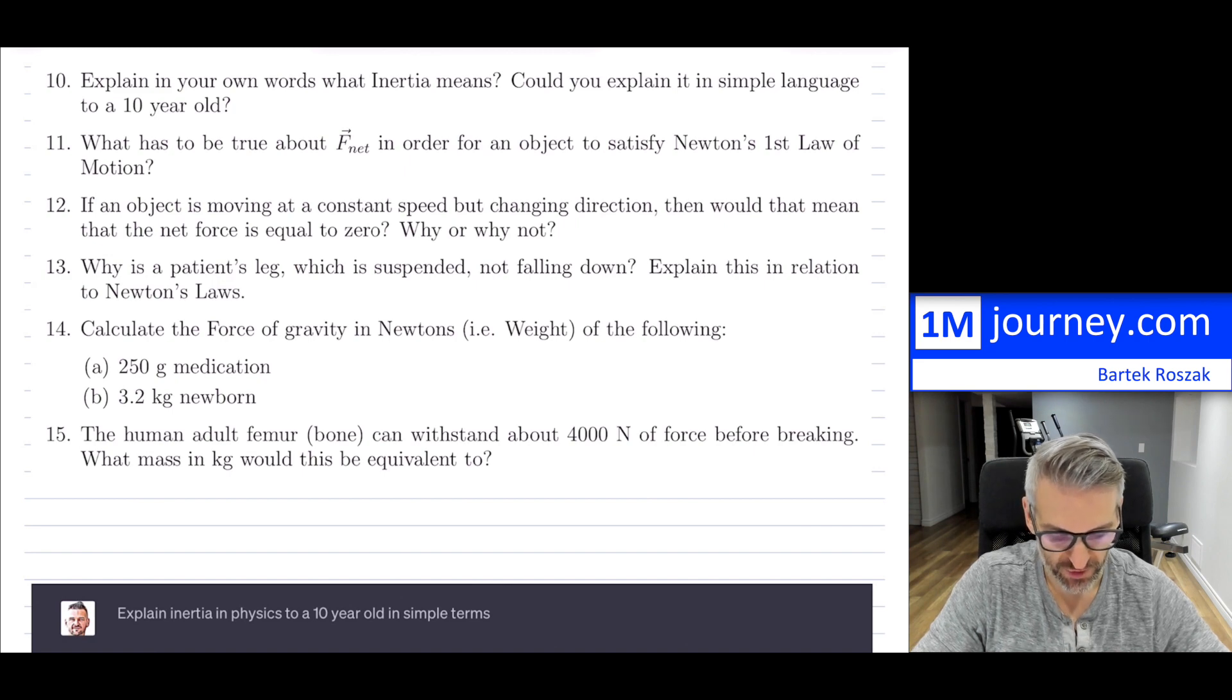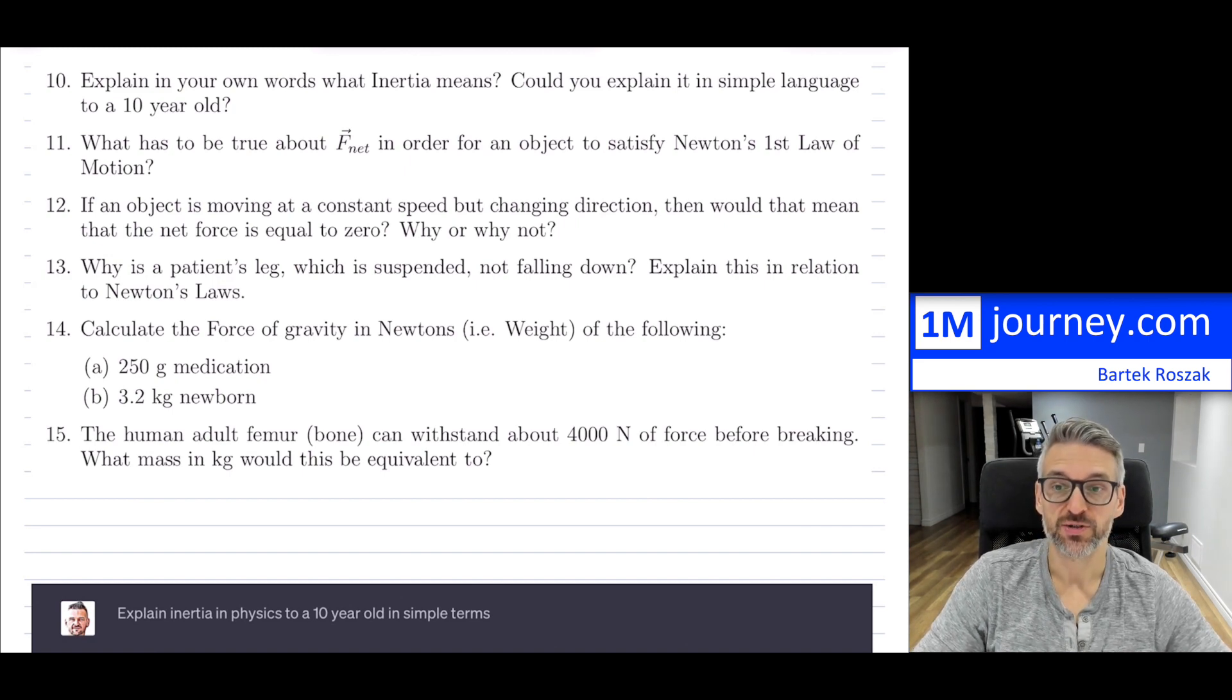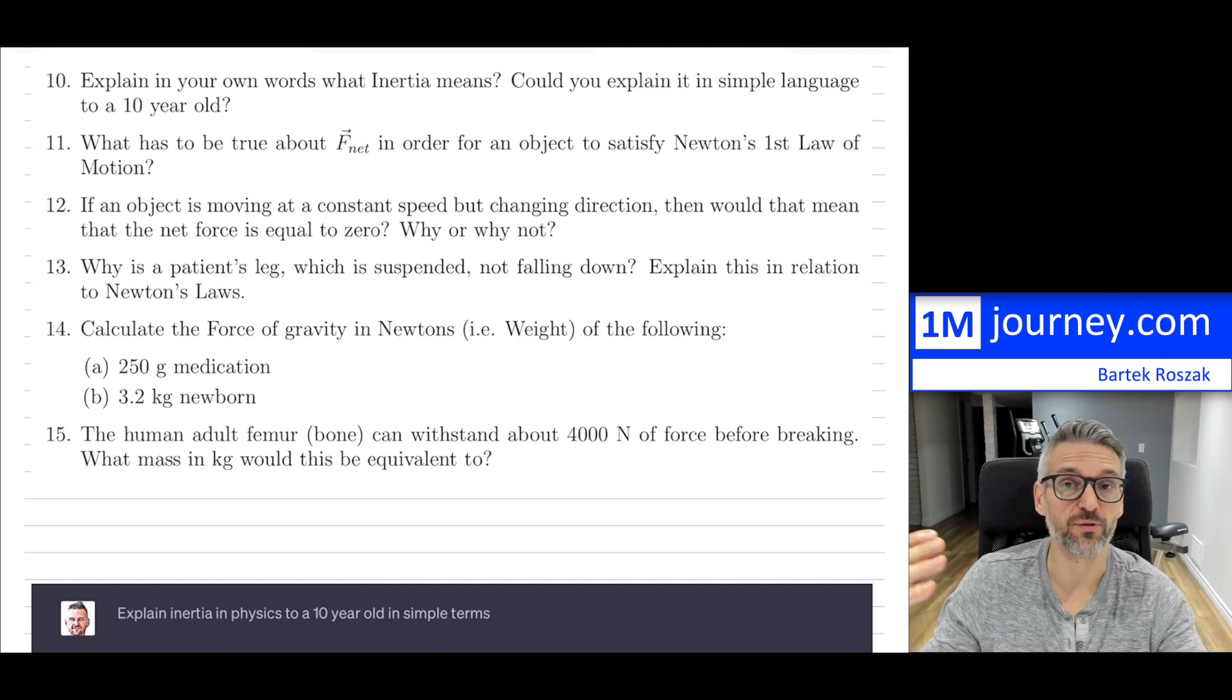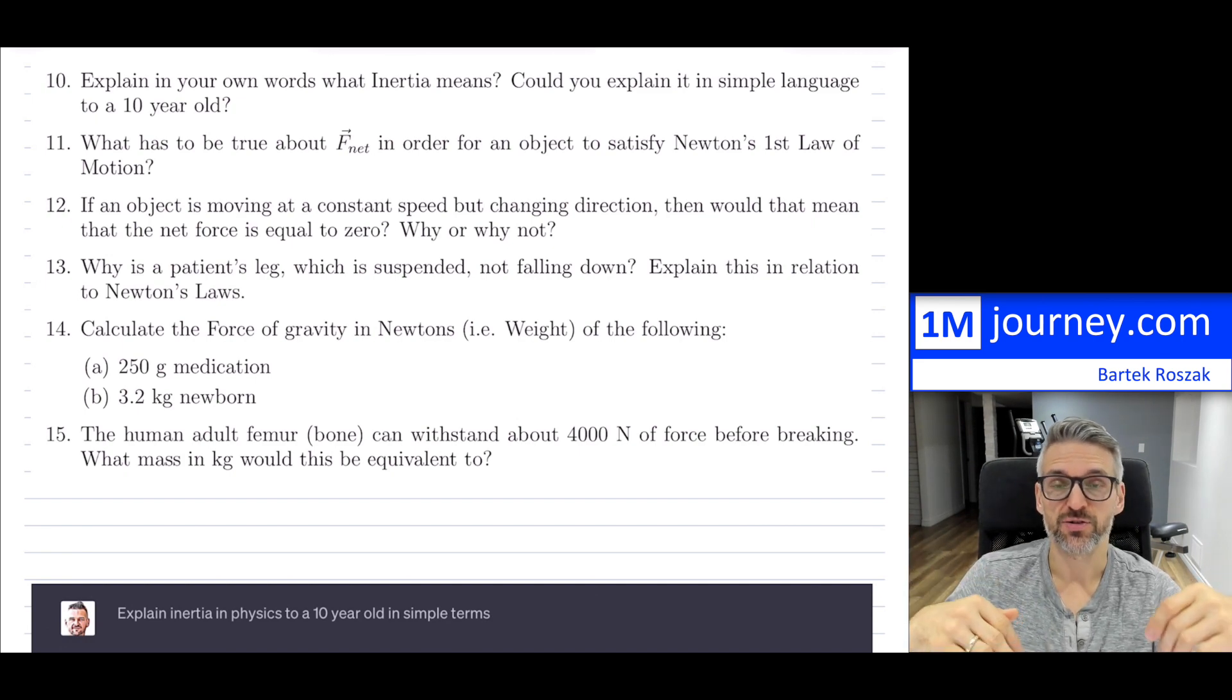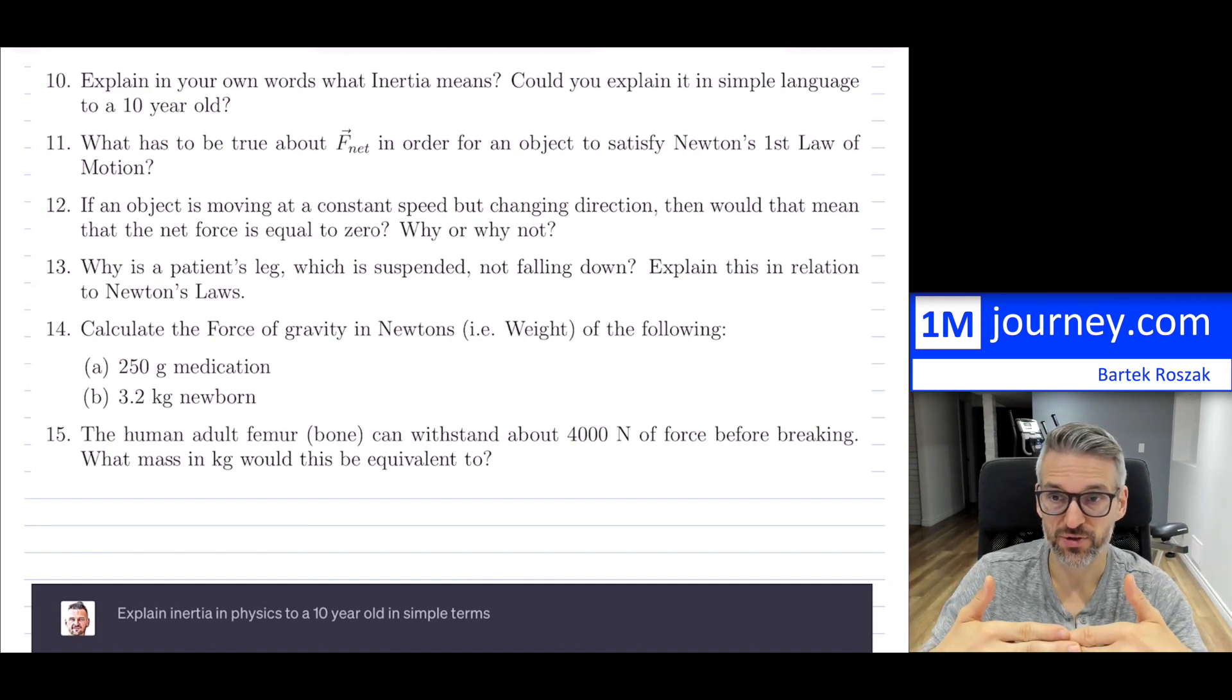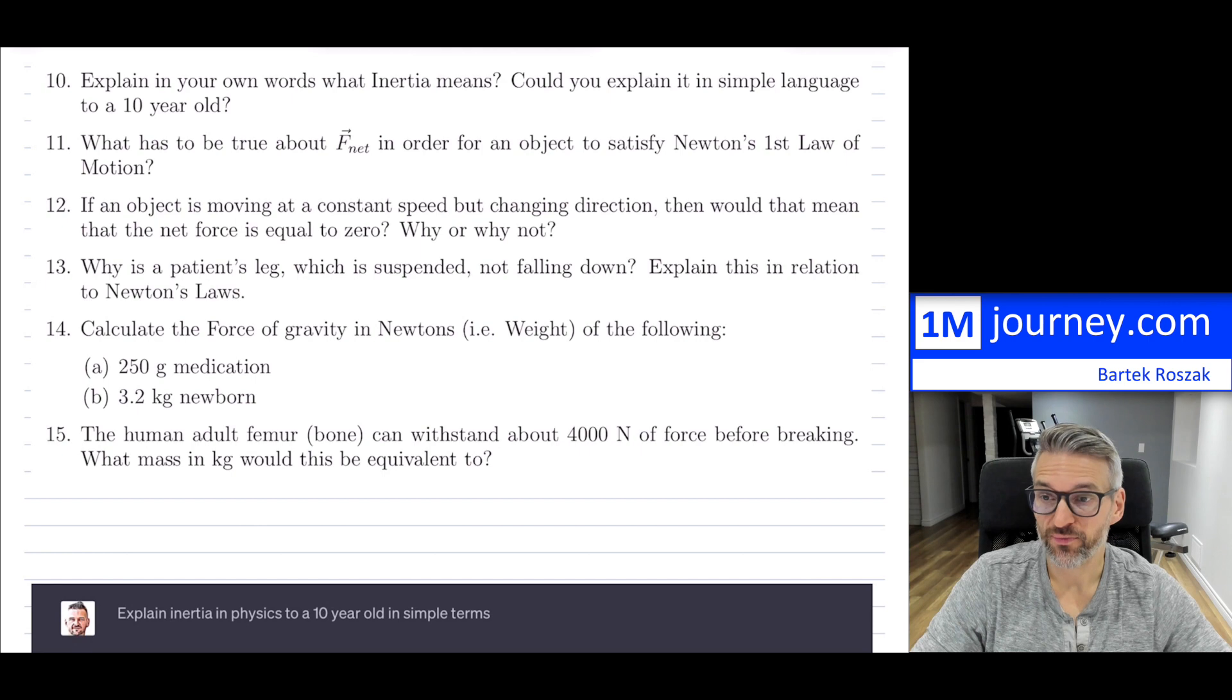For question number 11: what has to be true about the net force in order for an object to satisfy Newton's first law of motion? This one hopefully is easier for you to answer. First law is the fact that the net force is equal to zero. What that means is that all the forces must cancel each other off. F_net has to be equal to zero if it wants to satisfy Newton's first law.